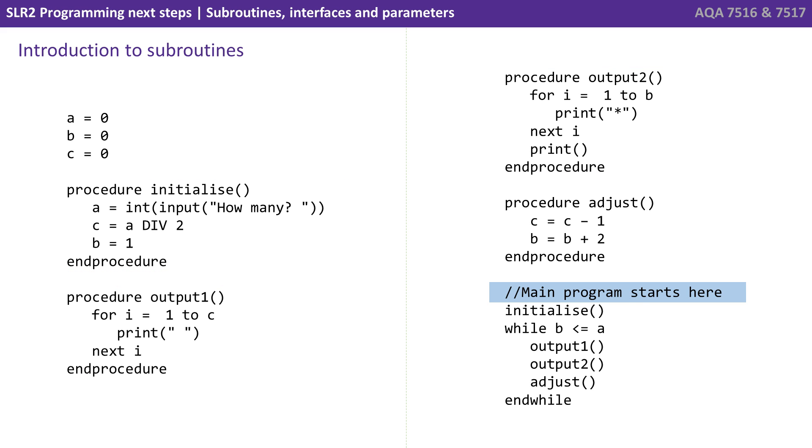Our main program actually starts at the end after the comment main program starts here. We can see the very first line of code which is run is a call to the initialize procedure. So as soon as we hit that call, the program jumps off and starts running the code from the procedure initialize. The program carries through until it hits end procedure, where it jumps back to the main program and carries on where it left off.